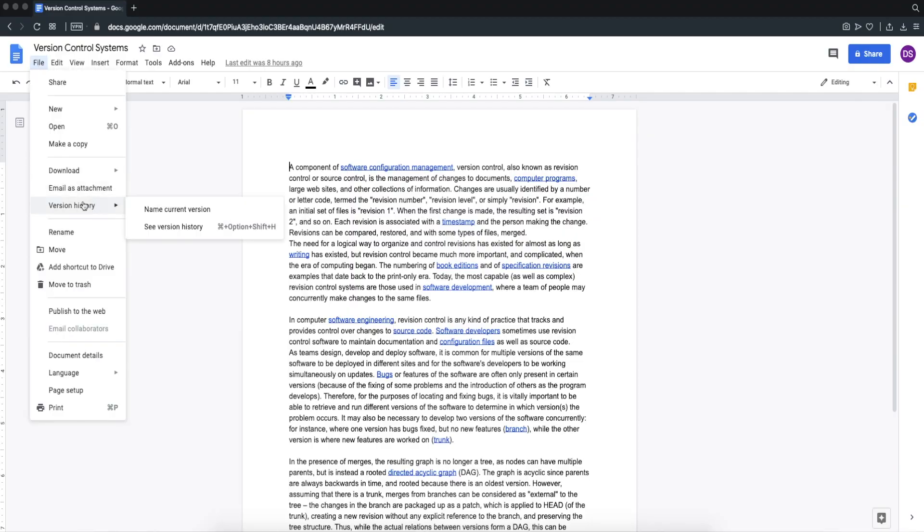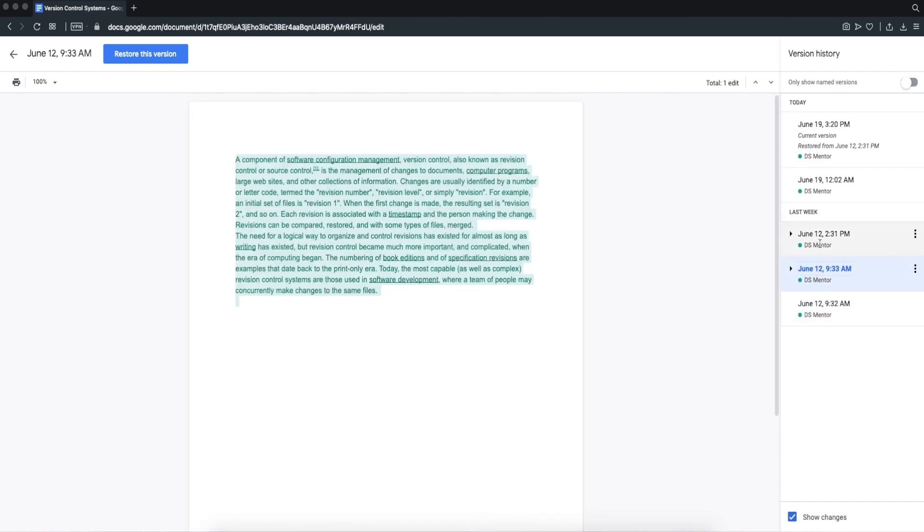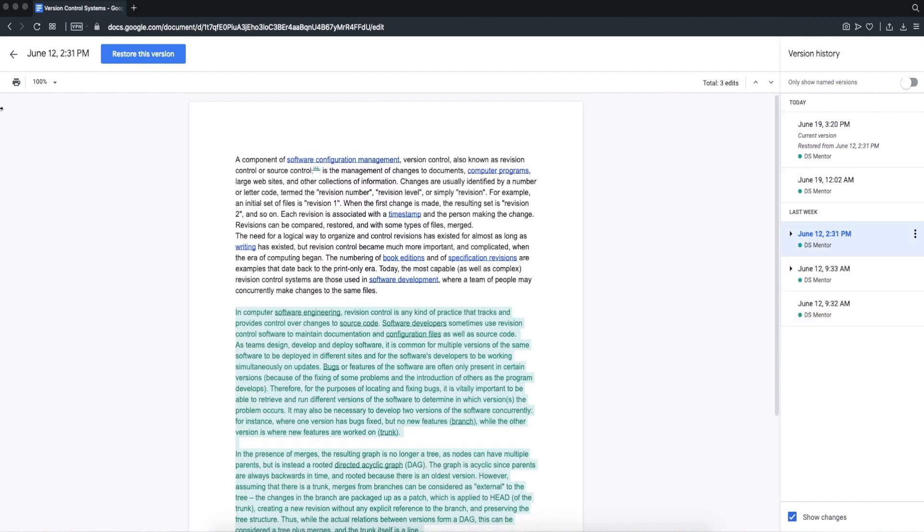Just like the version history feature in Google Docs, except that standalone systems are way more advanced and you have more control over what gets saved each time or in each version.